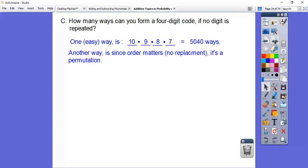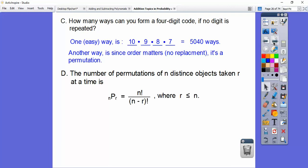Another way is since order matters, this is called a permutation. So that will lead us into our permutation formula. So the number of permutations of n distinct objects taken r at a time. Here it would be taken four at a time. It would be nPr, and you do the bigger number factorial, and then you subtract them factorial on the bottom. And r is always less than or equal to n.